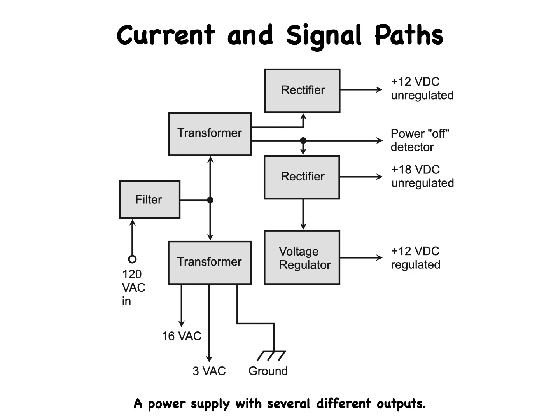The input AC goes through a filter, and then splits into two paths. Part of the AC goes to the lower transformer that provides 16 volts AC and 3 volts AC output, along with a ground connection.